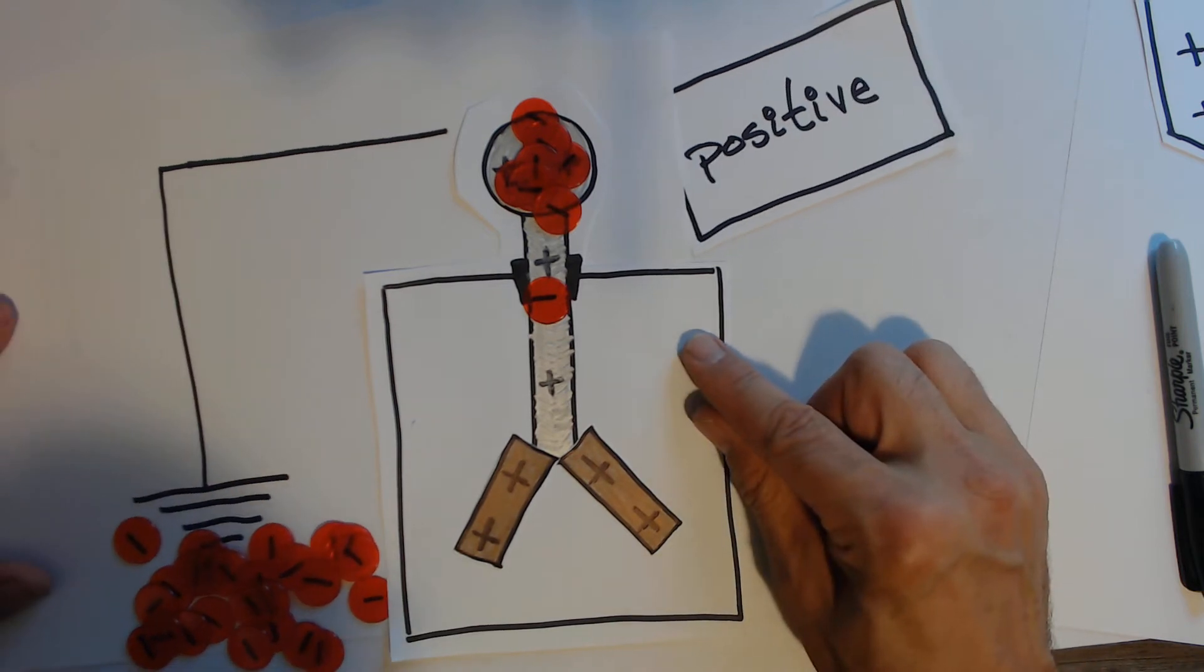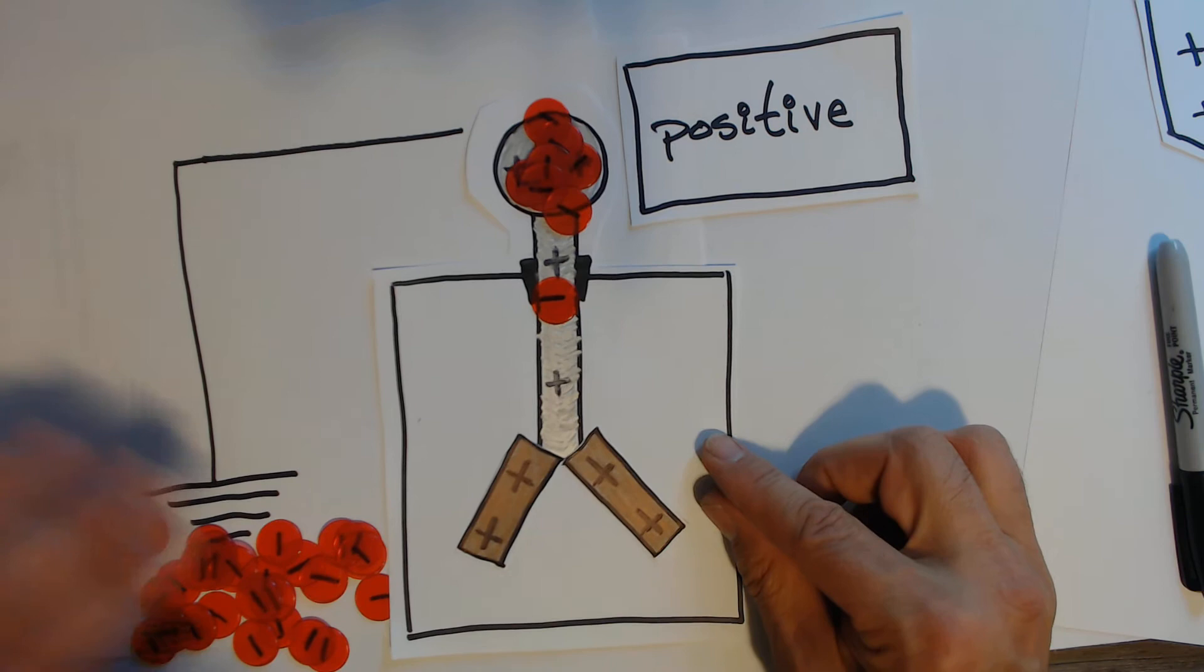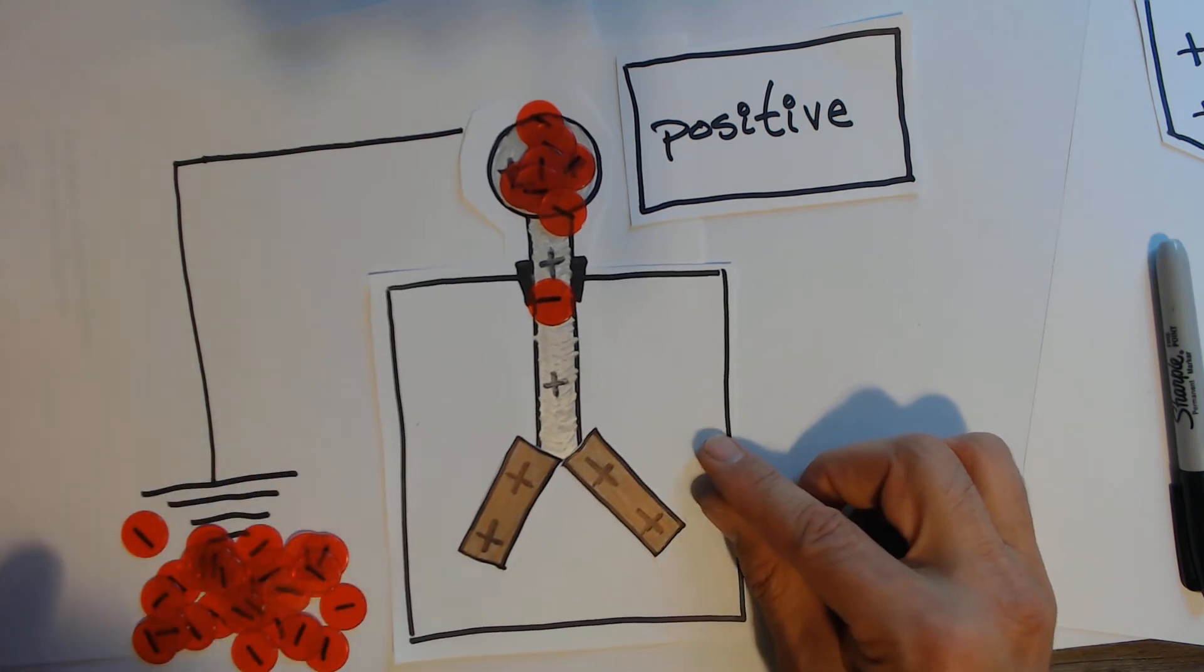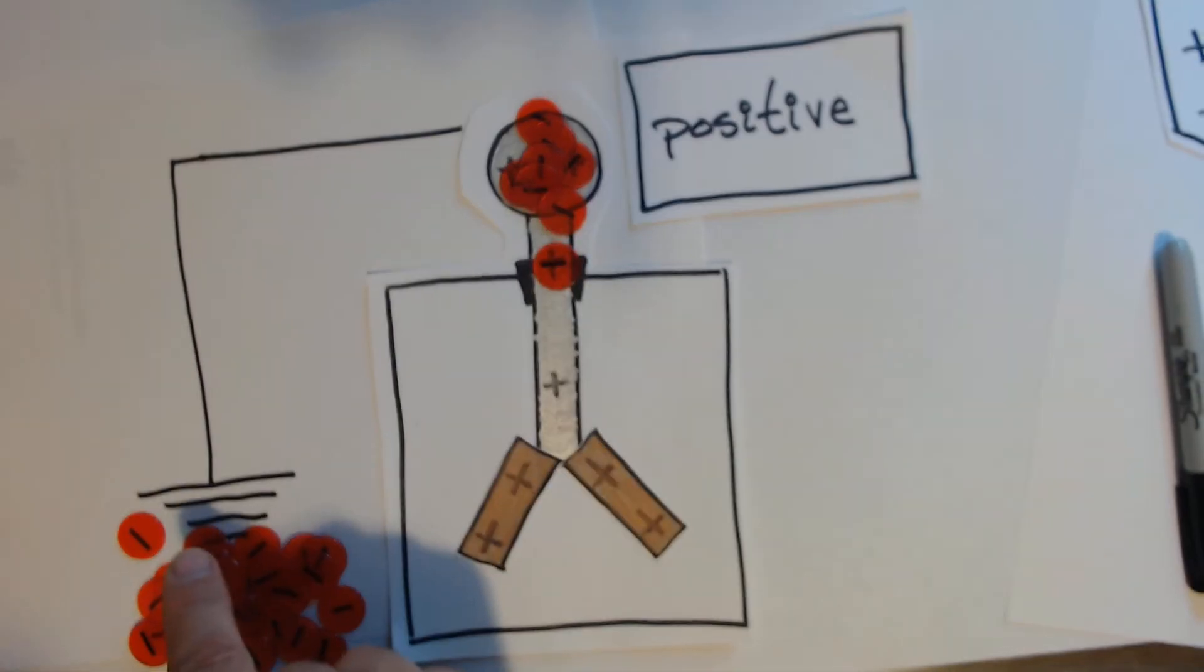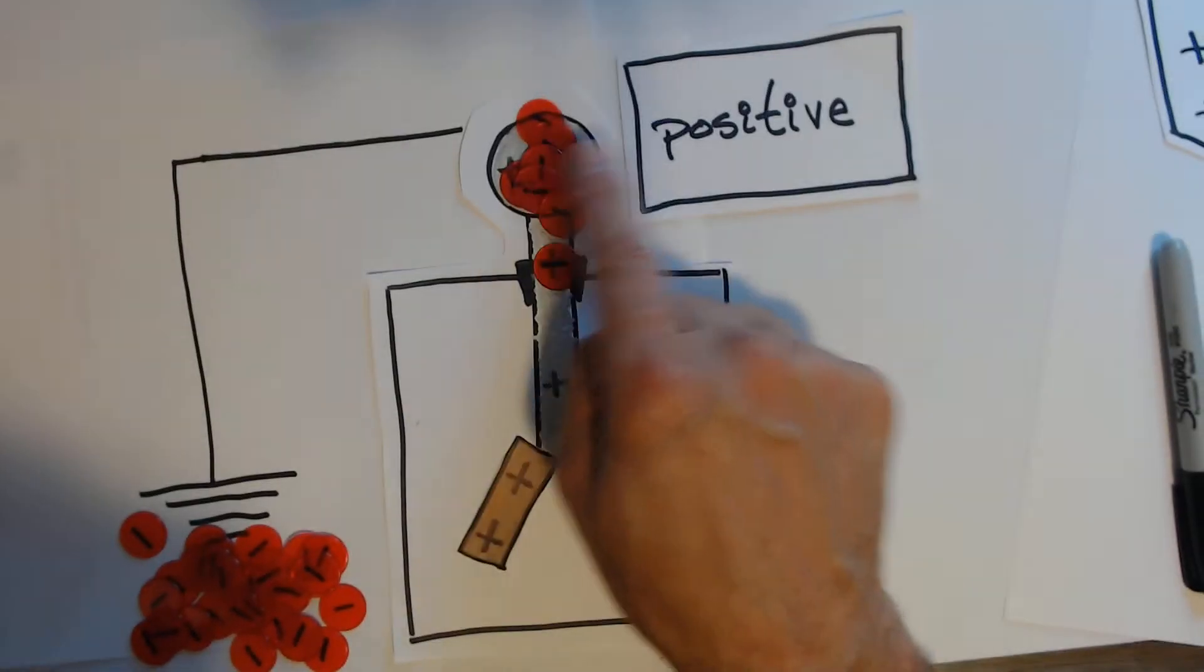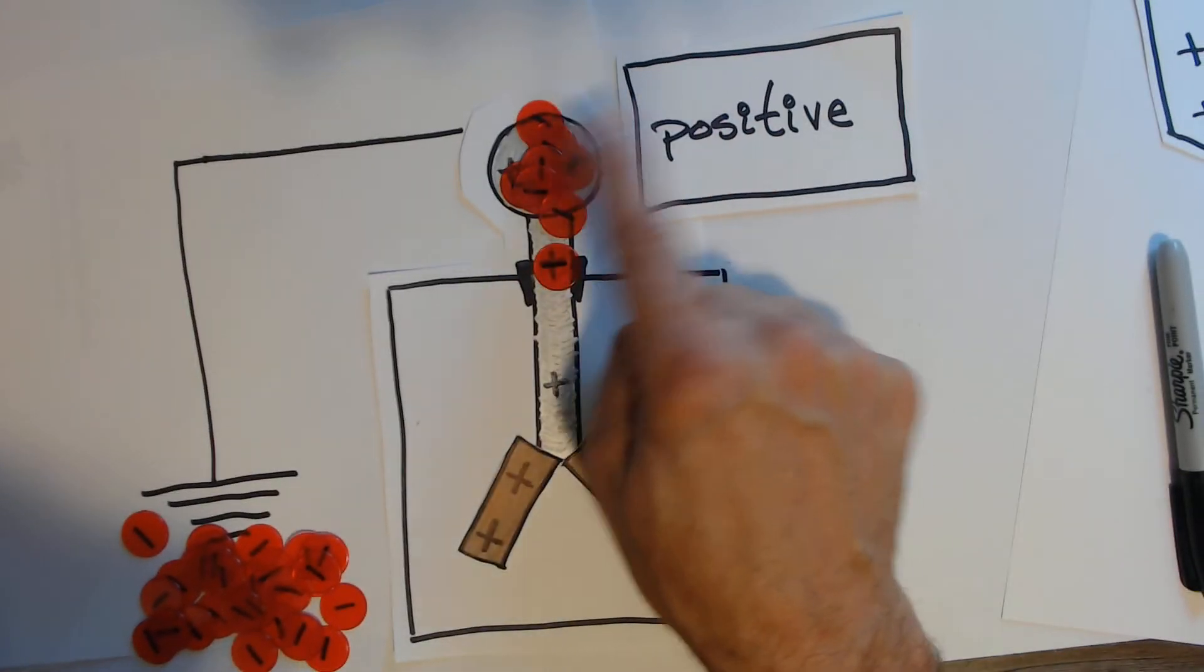When I then ground this with the object close by, this is where I've always found it kind of confusing. These electrons you would normally think, well they're going to escape to ground. No, positives are attracted to the negatives and the negatives are attracted to the positive. Opposite charges attract.